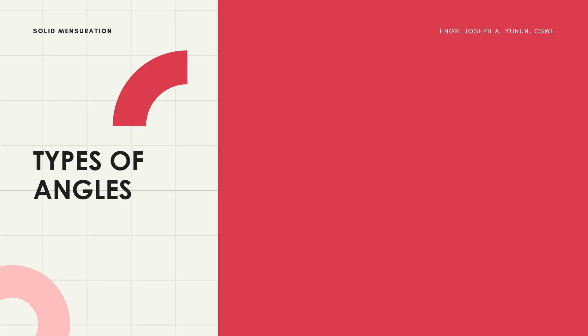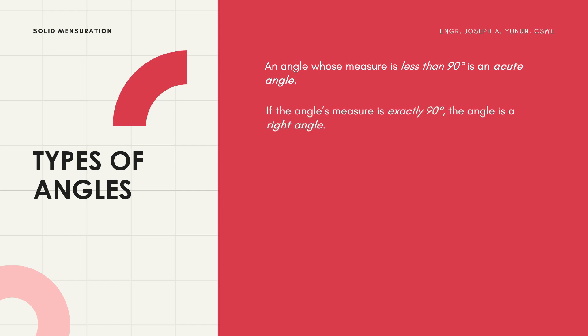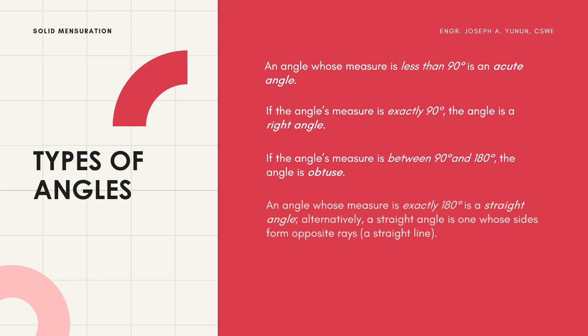There are different types of angles. An acute angle is one whose measure is less than 90 degrees. If the angle's measure is exactly 90 degrees, it is called a right angle. If the measure is between 90 and 180 degrees, it is called an obtuse angle. An angle whose measure is exactly 180 degrees is a straight angle, whose sides form opposite rays or simply a straight line. A reflex angle is one whose measure is between 180 and 360 degrees.